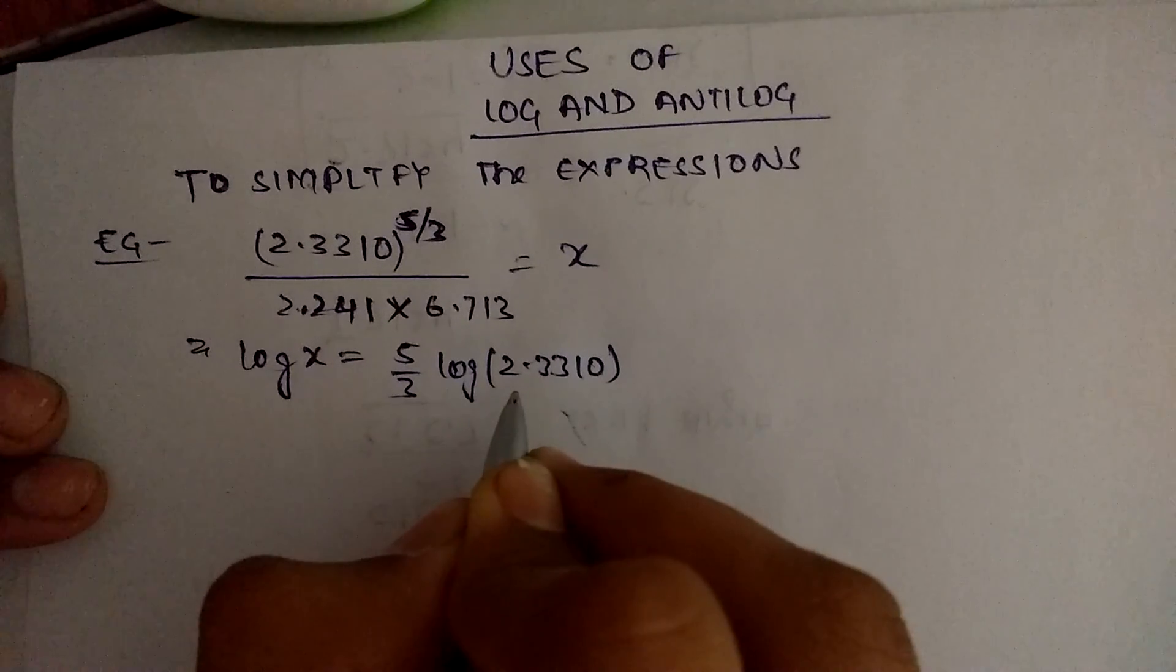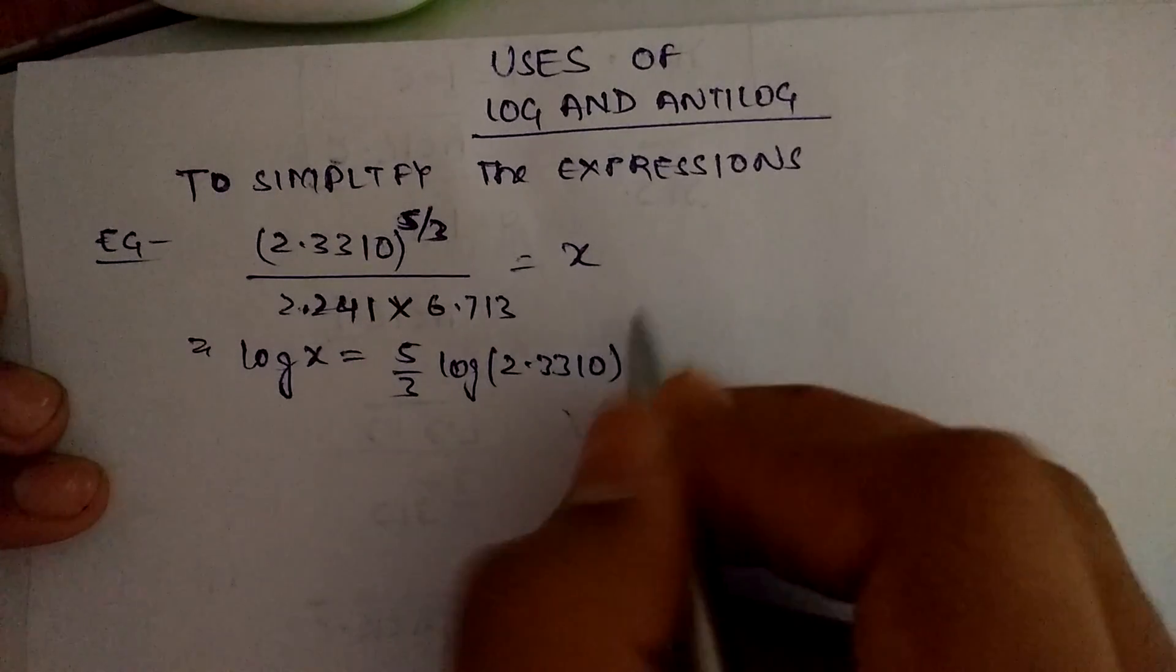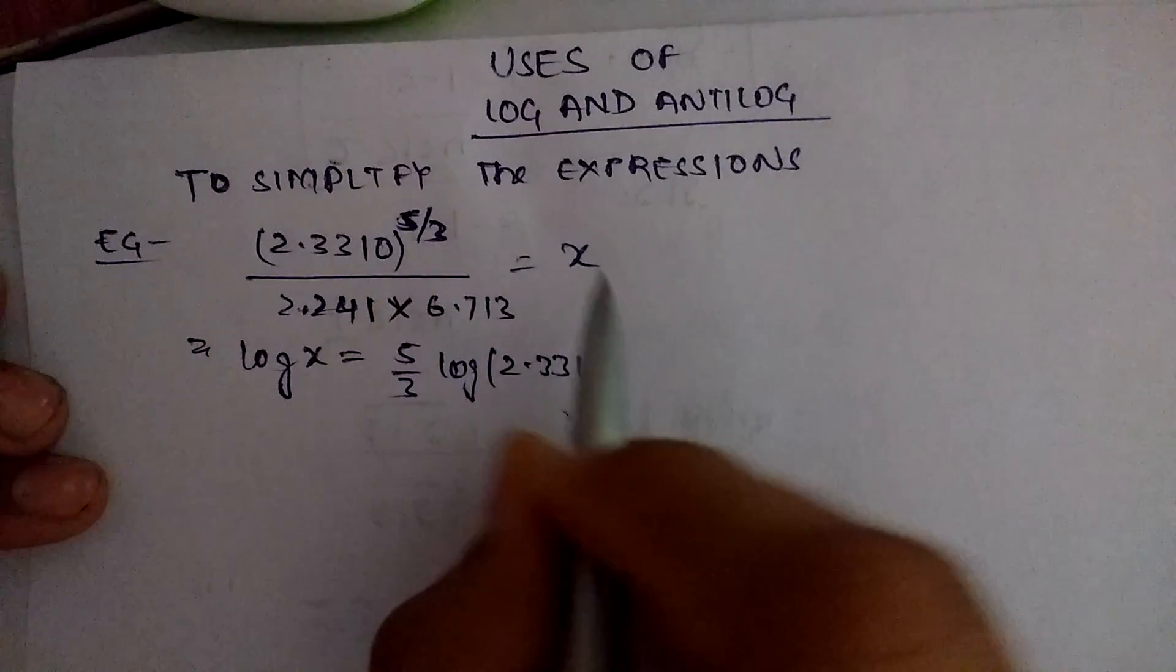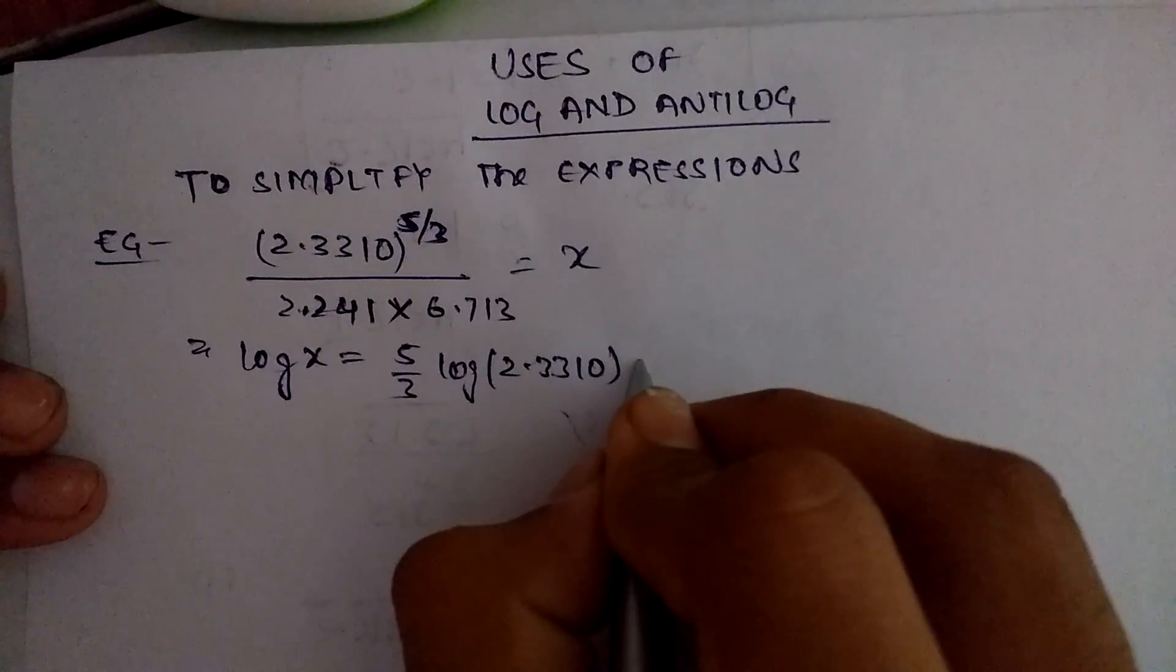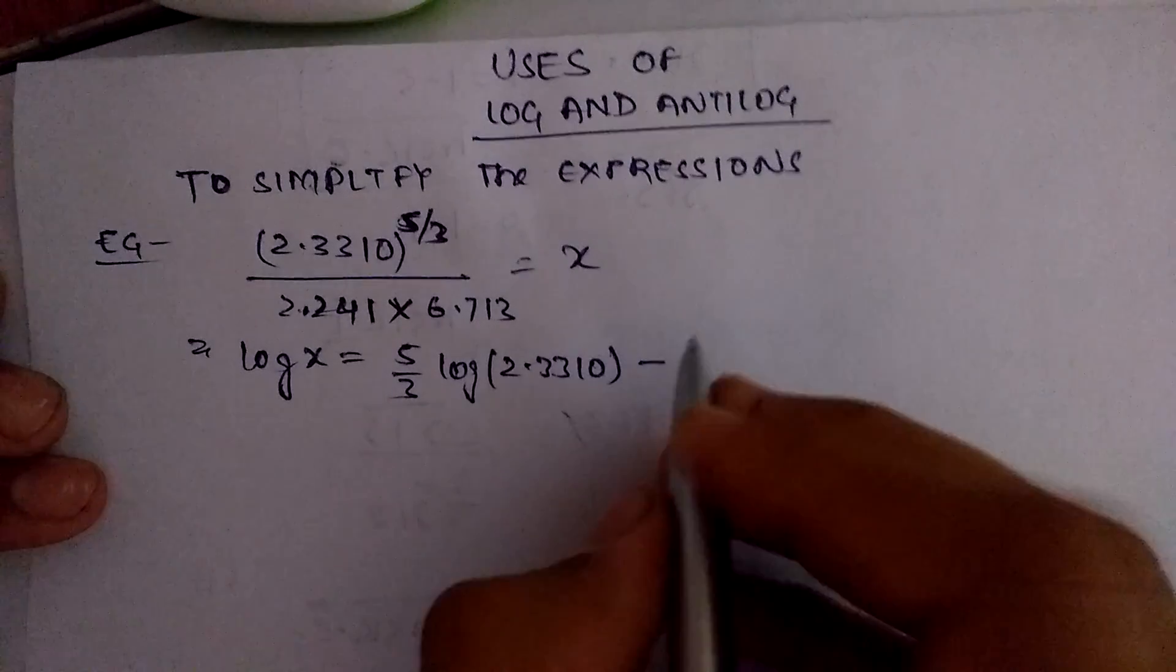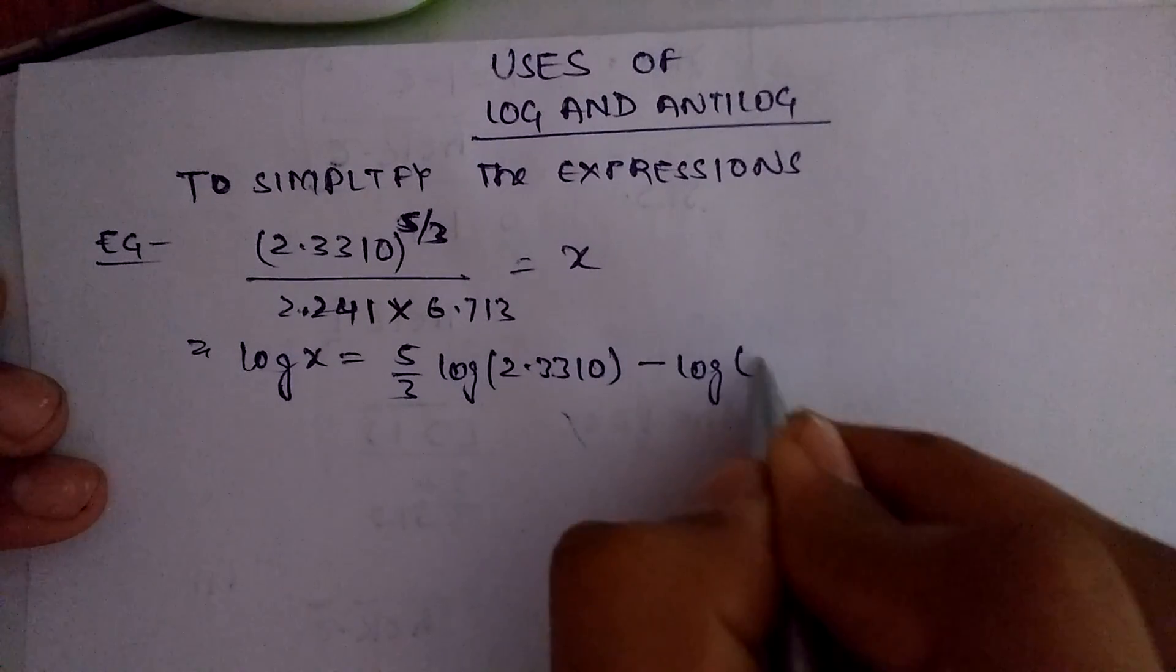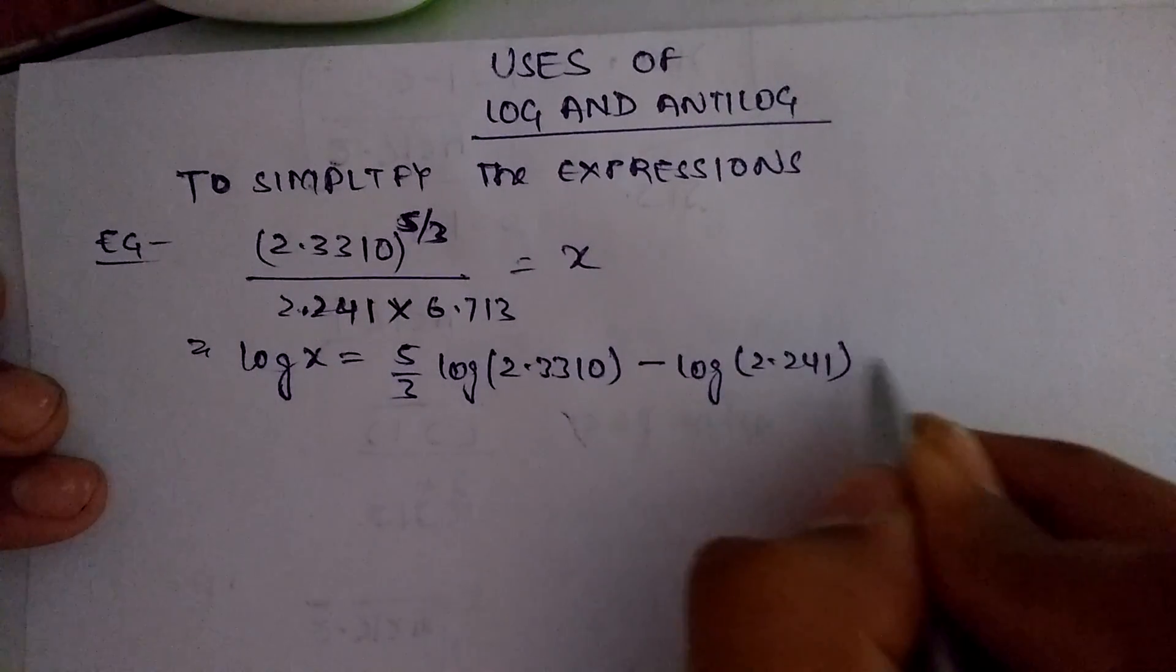And using the division formula, we will write minus log of 2.241 minus log of 6.713.